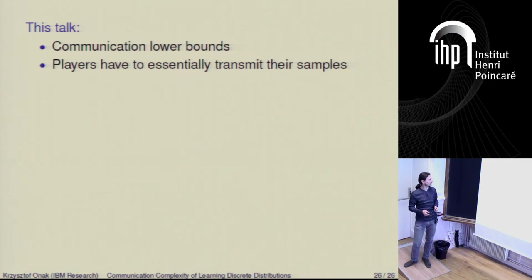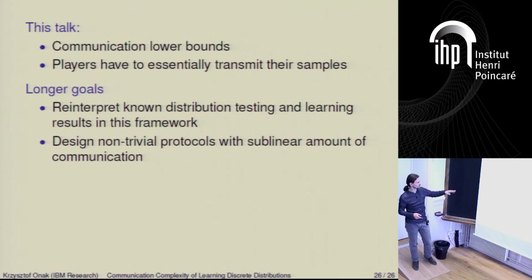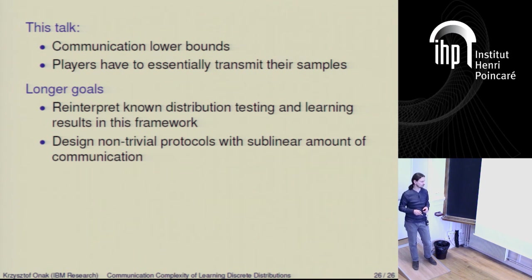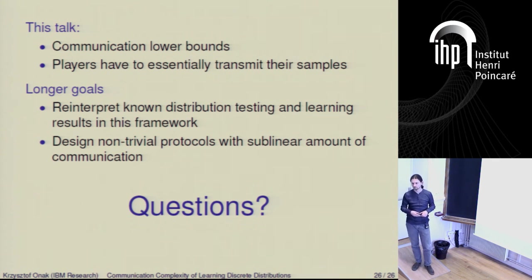In this talk I showed communication lower bounds for learning discrete distributions. In this specific case, the players essentially have to transmit their sample — there is no way to do it with significantly sublinear communication. The longer goal of this research is to reinterpret known distribution testing and learning results in this communication framework, and the hope is also to design some non-trivial protocols that use a sublinear amount of communication for other problems. Thank you.